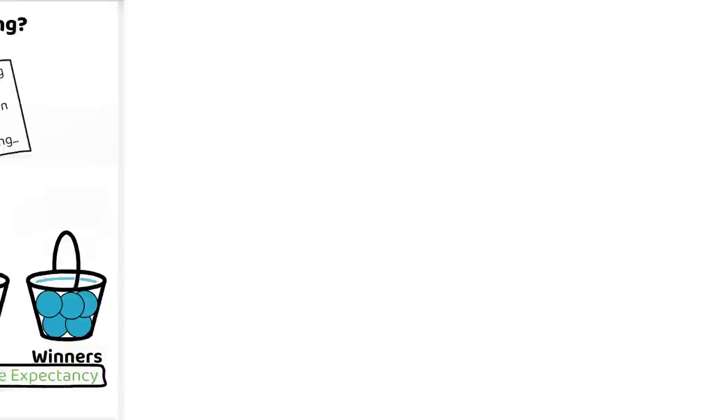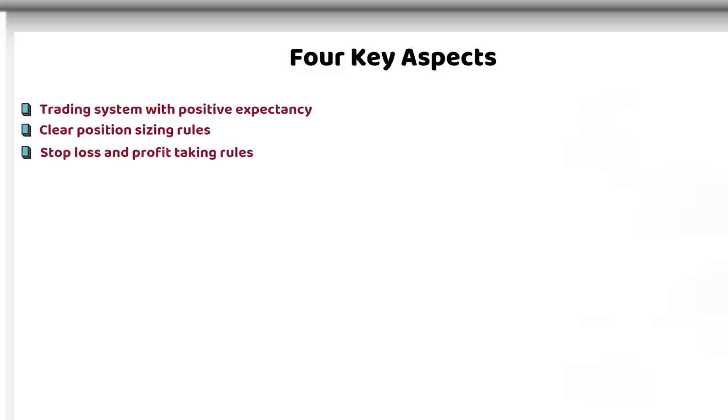There are four main aspects that must be considered when compounding your capital through swing trading. The trading system must have positive expectancy. You should have clear position sizing rules, stop-loss and profit-taking rules. And equally as important, you must maintain discipline.